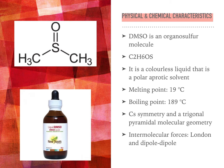DMSO is an organosulfur molecule. It is a colorless liquid that is a polar aprotic solvent, meaning that it cannot donate hydrogen. DMSO is a solvent able to dissolve both polar and non-polar compounds. It has a melting point of 19 degrees Celsius and a boiling point of 189 degrees Celsius.